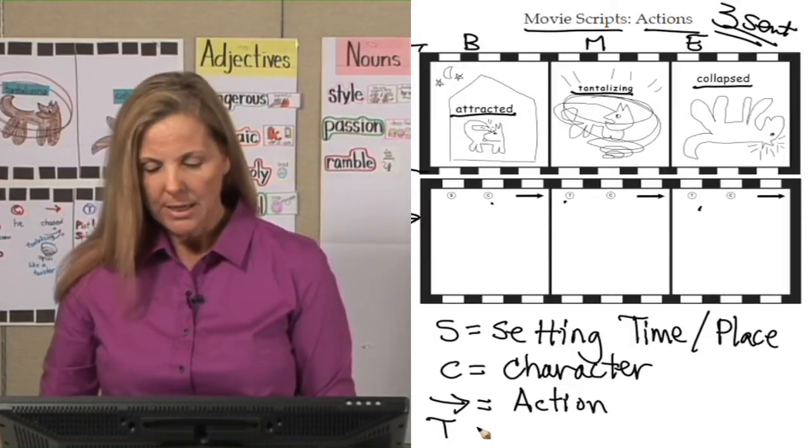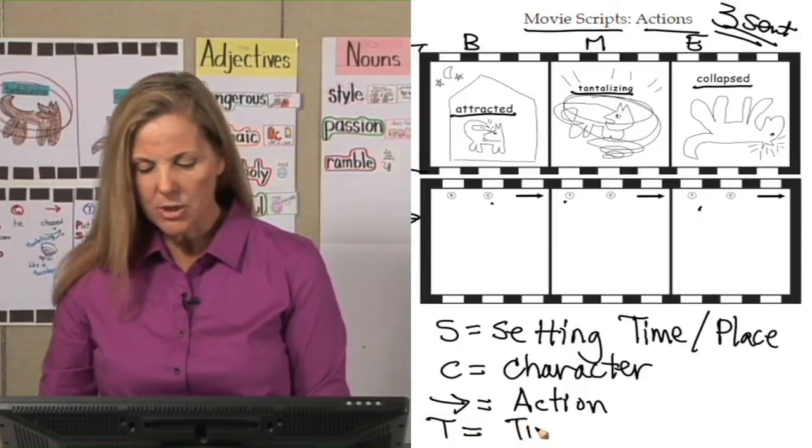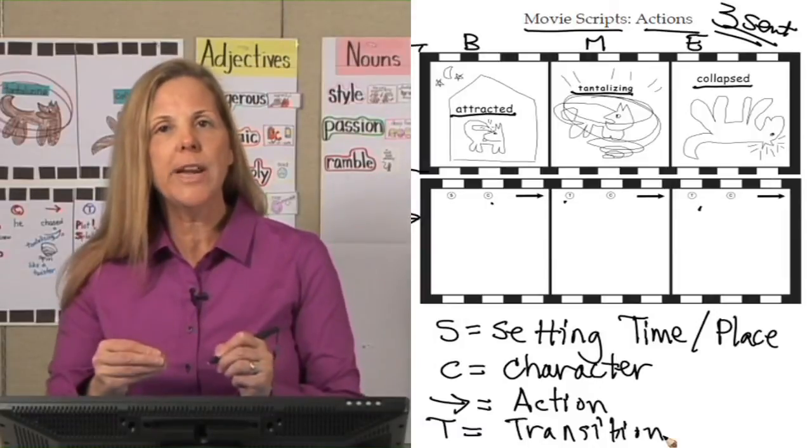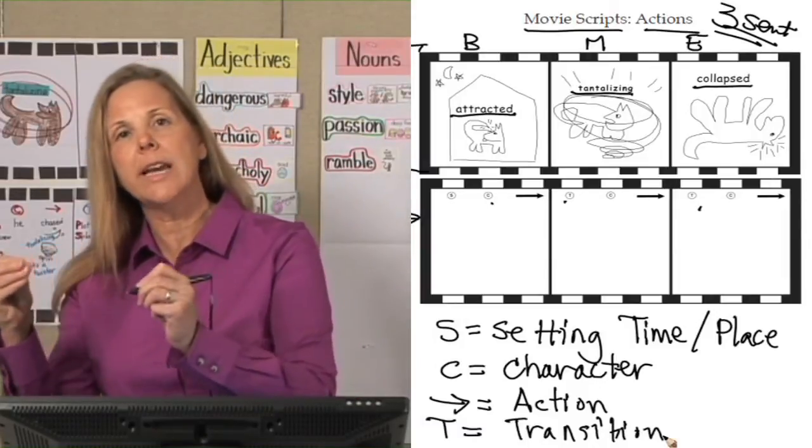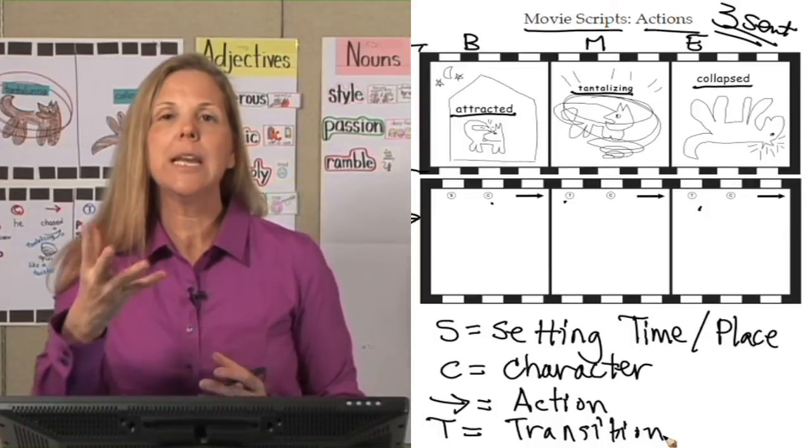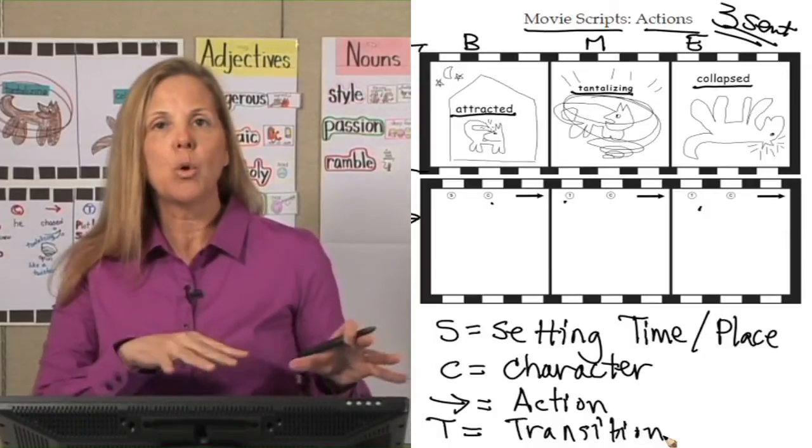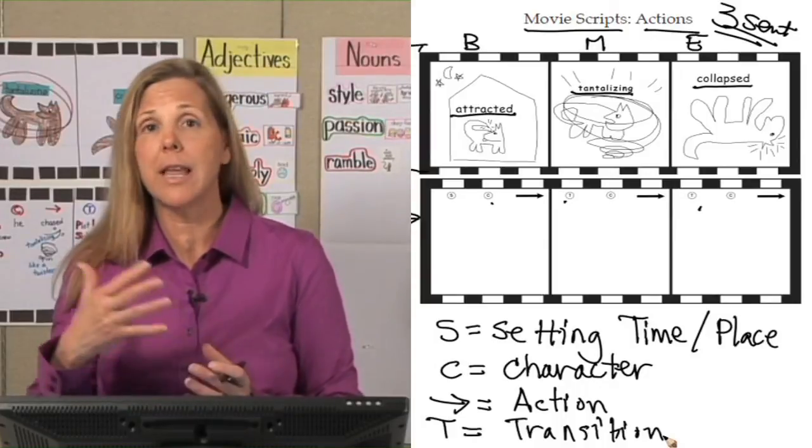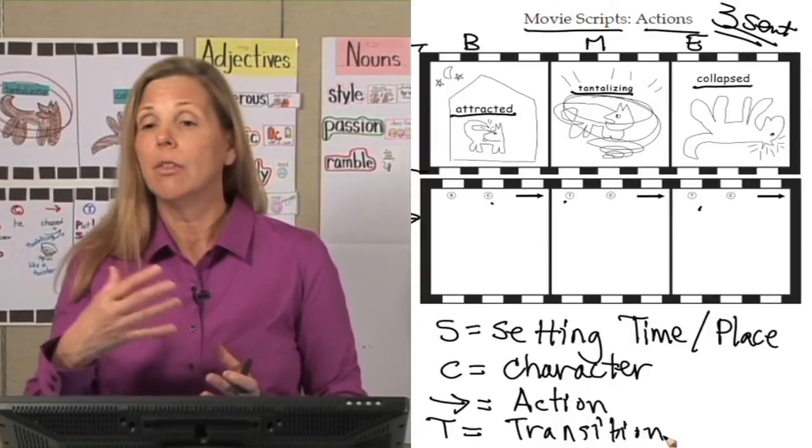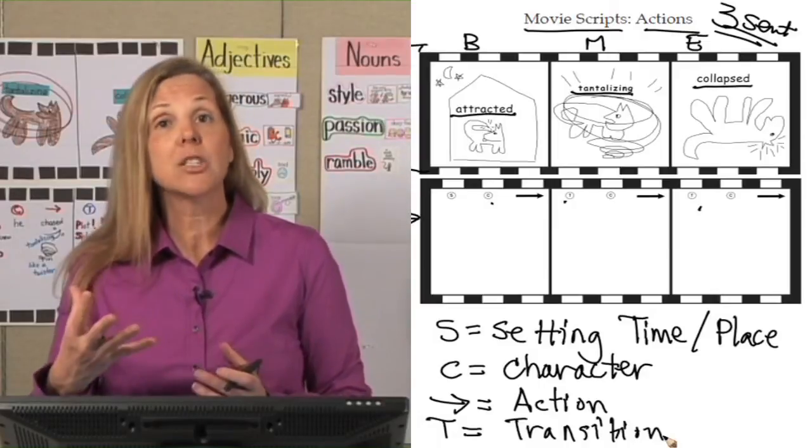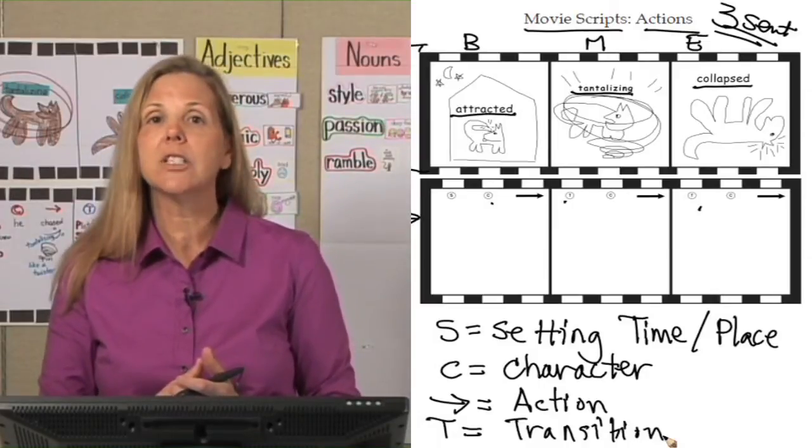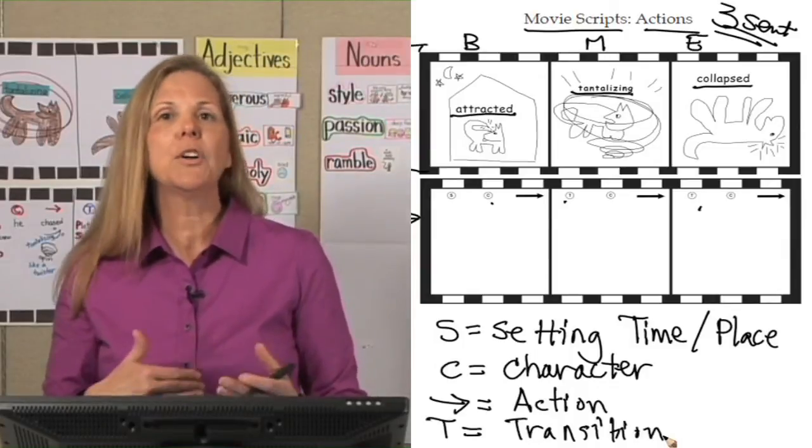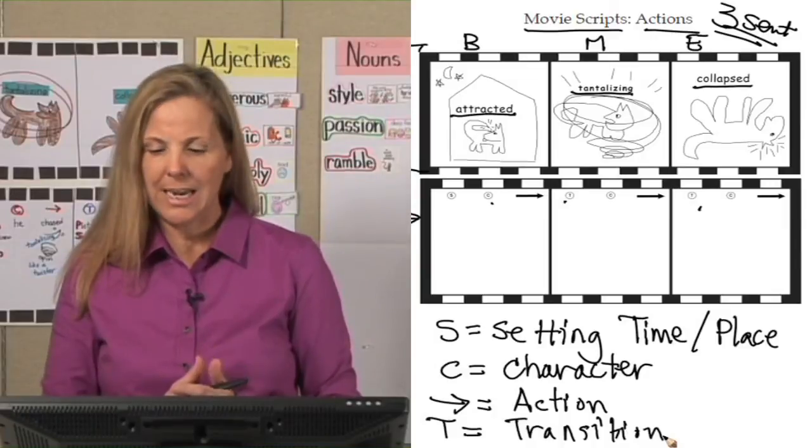The middle and the end box, those have the secret formula T, C arrow. The T is for transition. Those are special words that alert the reader how you are going to get from one action to the next action, that something has changed. So they're special words that move us from one action to the next action. And those words may tell us that the location has changed, the time has changed. Maybe it's an emotion feeling word. Maybe it's going to be telling us a sound effect.